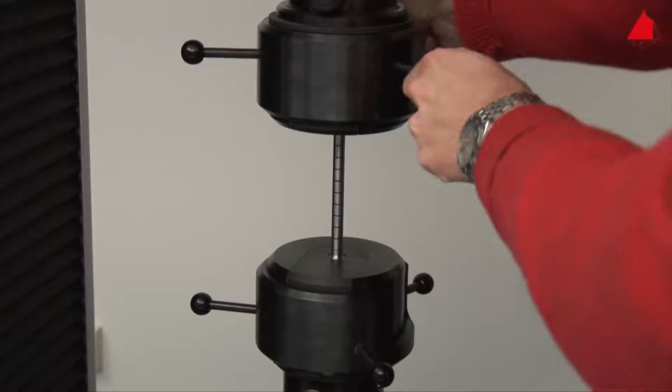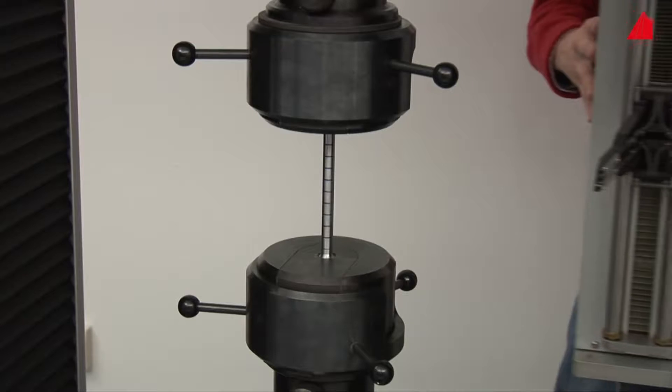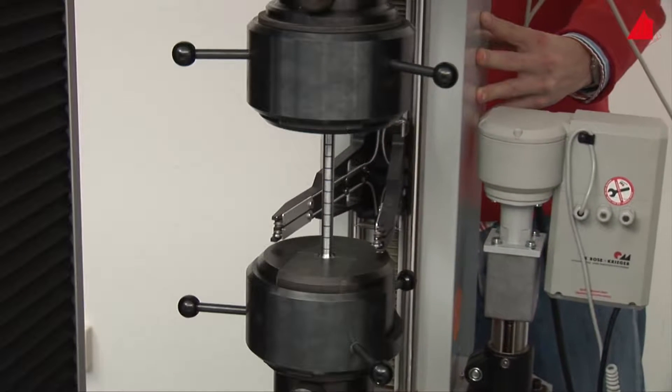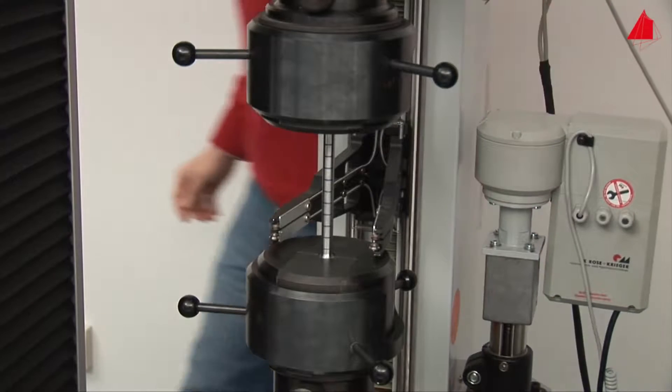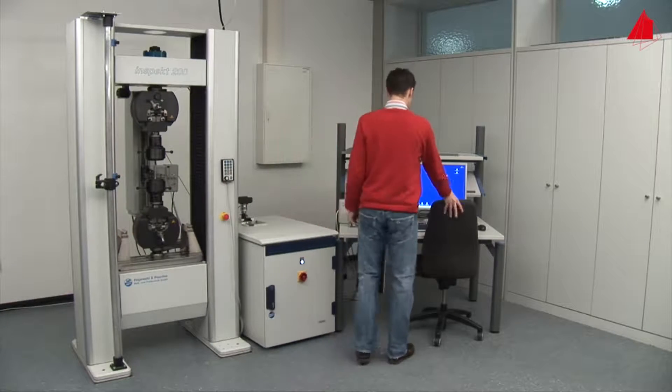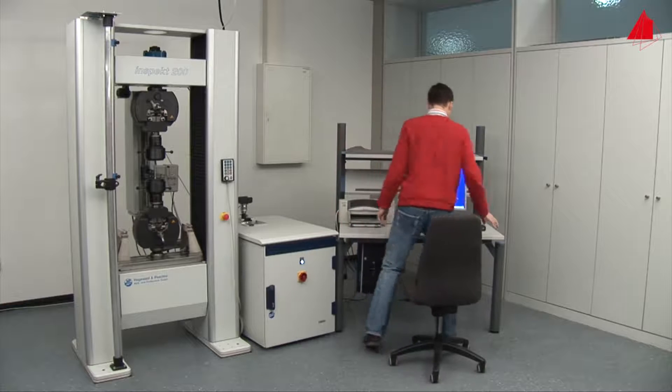In the next step, he swings the extensometer into its working position and checks that everything is correctly prepared. Then he selects all necessary testing parameters on the control computer.